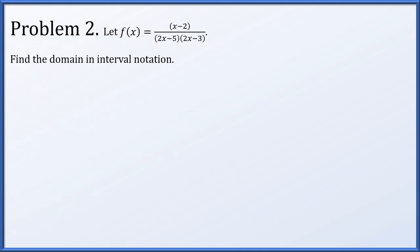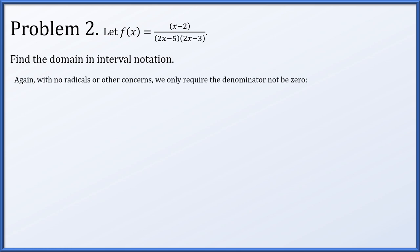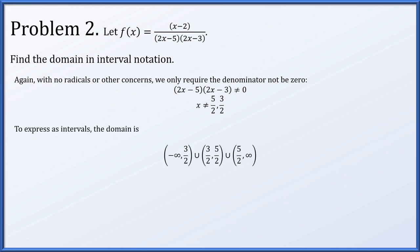For problem two, let f(x) equal (x minus 2) over (2x minus 5)(2x minus 3), and we need to find the domain. There are no radicals; we simply have one polynomial divided by another, so the denominator can't be zero. This means x cannot be 5/2 and it cannot be 3/2. In interval notation, this is all real numbers excluding 3/2 and 5/2.